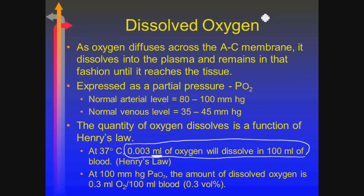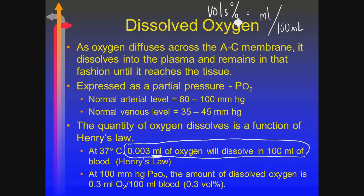This term — milliliters per 100 milliliters of blood — is also known as volume percent. So if you ever see milliliters per 100 milliliters of blood, you can interpret that as volumes percent. What we're doing here is quantifying how much oxygen is being transported in a dissolved state. If my PO2 is 100, I multiply that 100 times 0.003 and I get 0.3 volumes percent — 0.3 milliliters per 100 milliliters of blood.